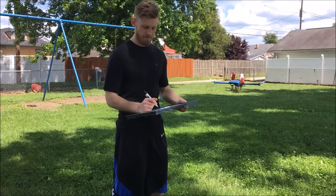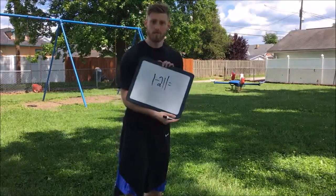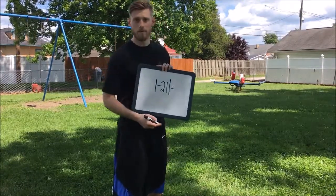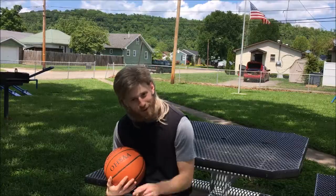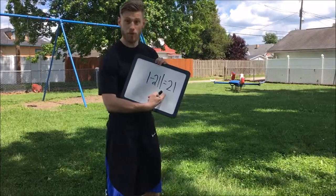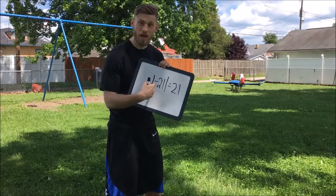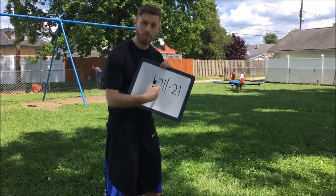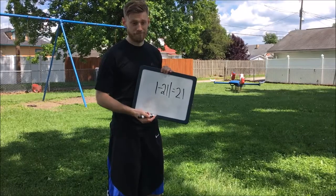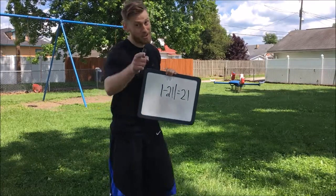Here's another example. If I have negative twenty-one as an absolute value, what would that be? Twenty-one. You're correct. It's twenty-one. Because negative twenty-one is twenty-one hops away from zero on a number line. Absolute value is a piece of cake, right? You just got educated, kid. Good job, man.